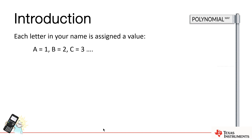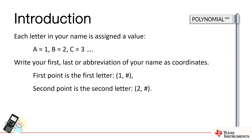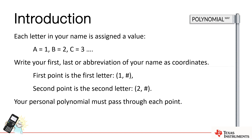Each letter of your name is assigned a value according to its position in the alphabet — A is 1, B is 2, C is 3, and so on. The first letter in your name becomes our first point, so that would be 1 comma whatever that letter is. If your name was Brian, it would be 1 comma 2 because B is the second letter. If your name was Chris, it would be 1 comma 3. The second point aligns to the second letter of your name, and so on. Your personal polynomial must pass through each and every point in your name.